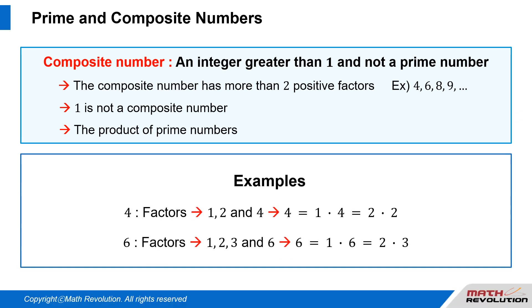For example, four: factors are 1, 2, and 4, as 4 equals 1 times 4 equals 2 times 2. Six: factors are 1, 2, 3, and 6, as 6 equals 1 times 6 equals 2 times 3.